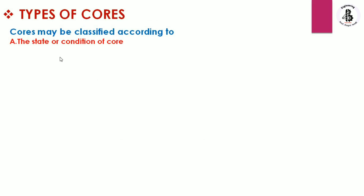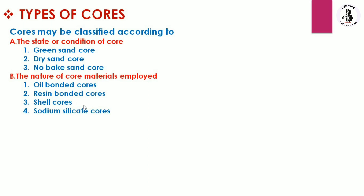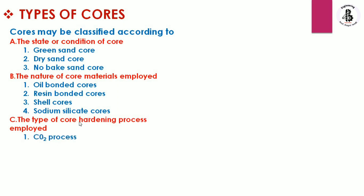Different types of cores: cores may be classified according to the state or condition of the core — first, green sand core; second, dry sand core; third, no-bake sand core. By the nature of core materials employed: oil-bonded cores, resin-bonded cores, shell cores, and sodium silicate cores. By the type of core hardening process: the CO2 process, the hot box process, and the cold set process.